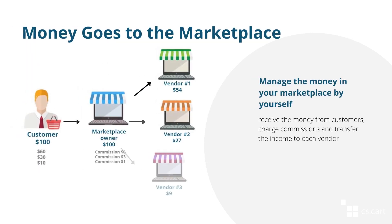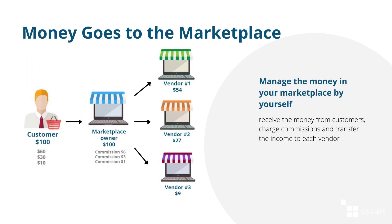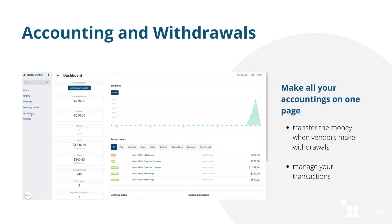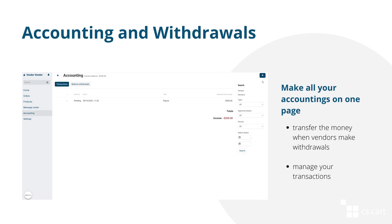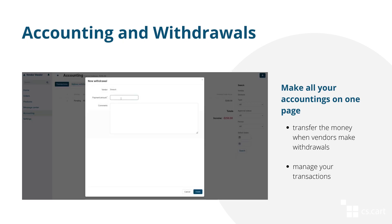The basic model is when all the money goes to the marketplace owner. A customer pays for the order, and the marketplace owner receives the money. Using the vendor plans, the admin charges vendors for commissions and fees for selling in his marketplace, and after that sends the income to each vendor. After the payment, all the money goes to the marketplace, but the vendor's share gets listed on the vendor's account balance.